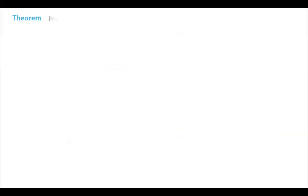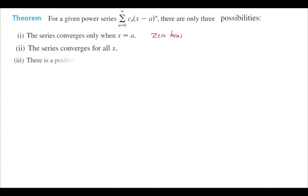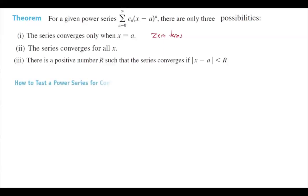We have a nice theorem here. For a given power series summation of c_n (x minus a) to power n, there are only three possibilities. One is the series converges only when x equals a. The second possibility is the series converges for all x values. The third possibility is there is a positive number r such that the series converges if the absolute value of (x minus a), the distance between x and a, is less than r, and at any other point it's going to be divergent.